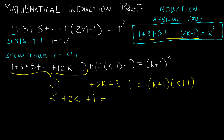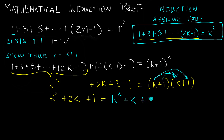For the right hand side, we expand k plus 1 times k plus 1. k times k gives k squared. k times 1 gives a positive k. 1 times k gives another positive k as well. And 1 times 1 is equal to 1. So k plus k is equal to 2k.